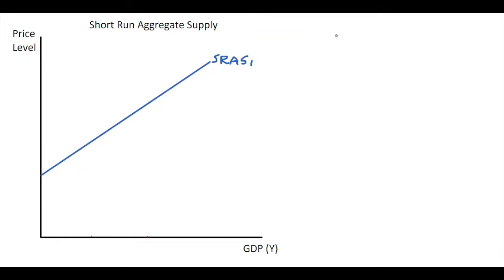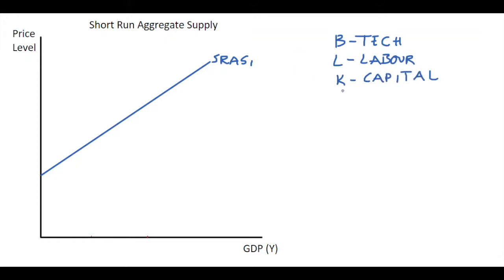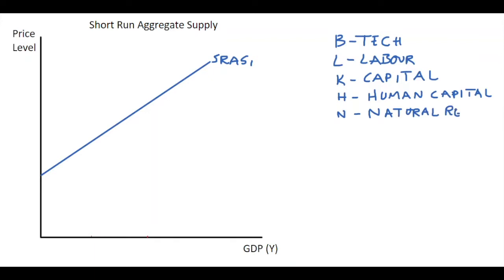Beforehand we looked at B which was technology, L which was the quantity of labor in the market, K which represented the quantity of capital in the market, H which represented human capital — how educated the workforce are — and finally N which is a country's natural resources. So we have all these features of an economy that can affect both the short and long run aggregate supply.